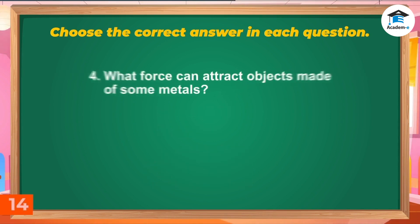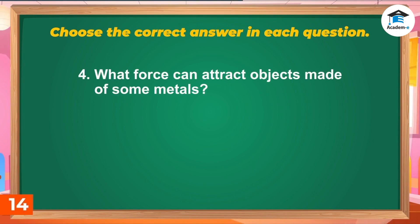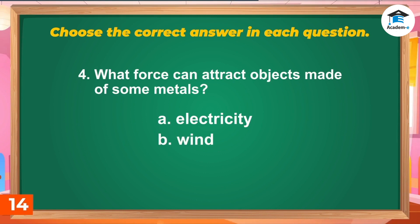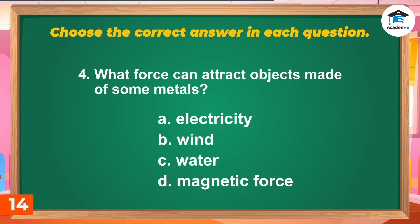Question 4: What force can attract objects made of some metals? A. Electricity, B. Wind, C. Water, D. Magnetic force. Answer: D. Magnetic force.